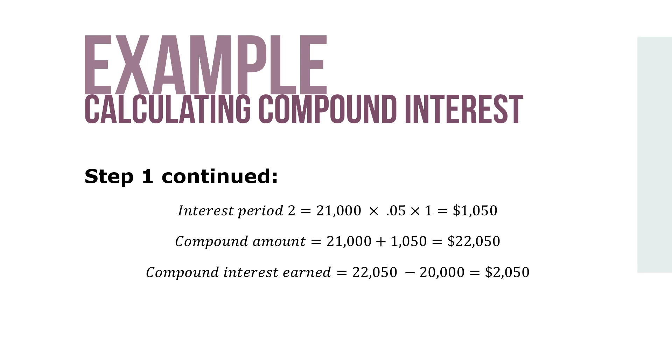The compound interest earned equals $22,050 minus $20,000, for a total of $2,050.